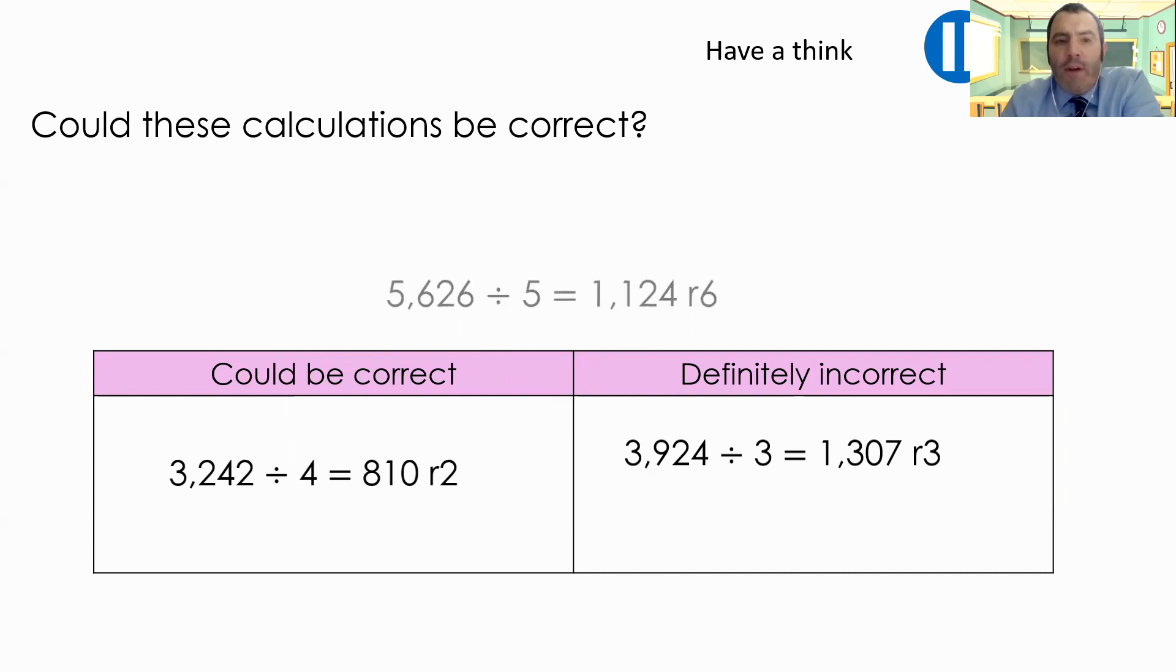That leaves me with my final question, 5,626 divided by five. Again, I'm going to ignore all the numbers. I'm just going to look at the remainder and the divisor. My remainder is bigger than my divisor. Therefore, it cannot be correct. It's definitely incorrect.